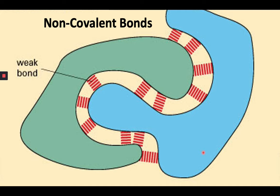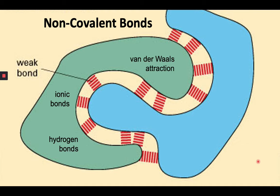In aqueous solutions, covalent bonds are 10 to 100 times stronger than the other attractive forces between atoms, allowing their connections to define the boundaries of one molecule from another. Much of biology depends on the specific binding of different molecules to each other. This binding is mediated by a group of non-covalent attractions that are individually quite weak, but whose bond energies can sum to create an effective force between two separate molecules. We will now be meeting the four different non-covalent bonds or forces: ionic bonds, hydrogen bonds, van der Waals attraction also known as London forces, and hydrophobic interactions.